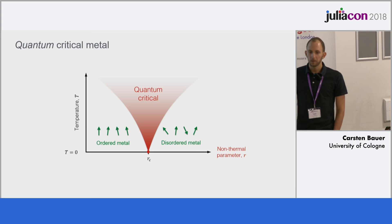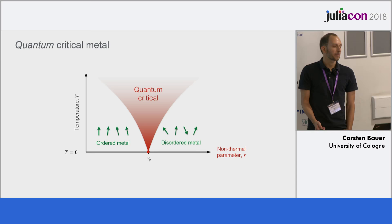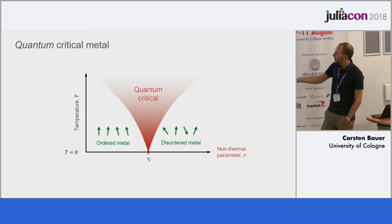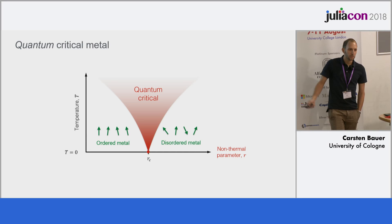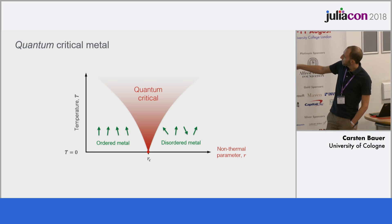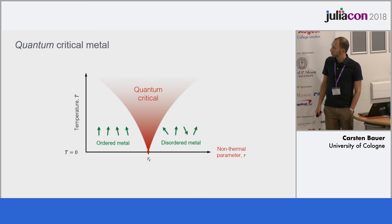Let me start by giving you an impression of what I actually do, although not all of you might be physicists. In my PhD I study quantum critical metals. Typically these are metallic compounds cooked up in a lab which at very low temperatures show a phase transition from a magnetically ordered metallic phase to a disordered, non-magnetic phase. As these transitions happen very close to absolute zero, thermal fluctuations are frozen out and it's solely quantum fluctuations that drive this phase transition, giving rise to a fan-shaped quantum critical region in the phase diagram — interesting physics that is still part of very active research, part of my PhD.